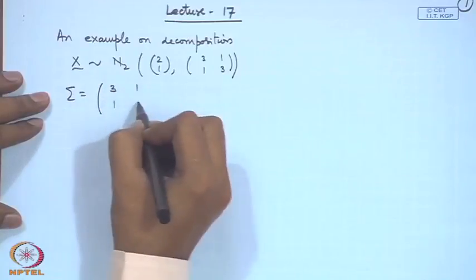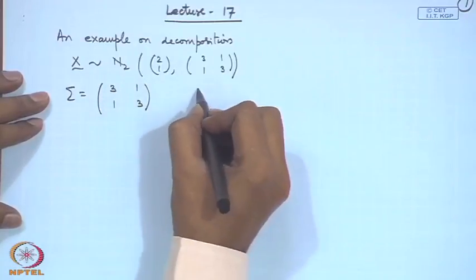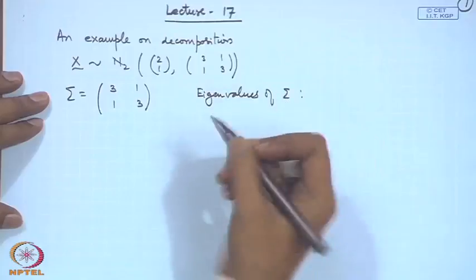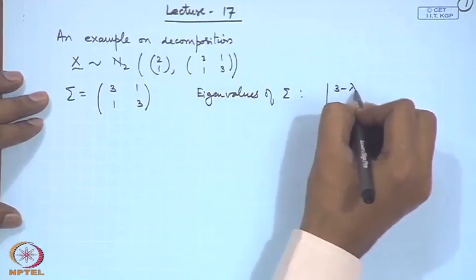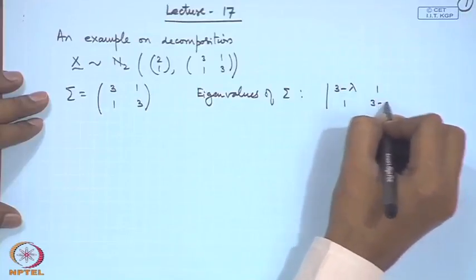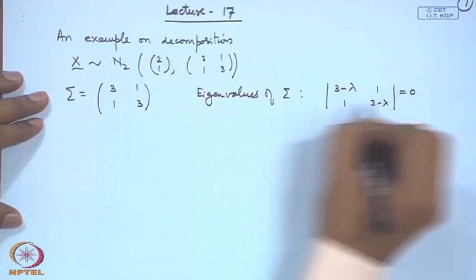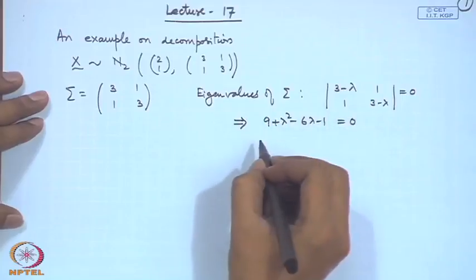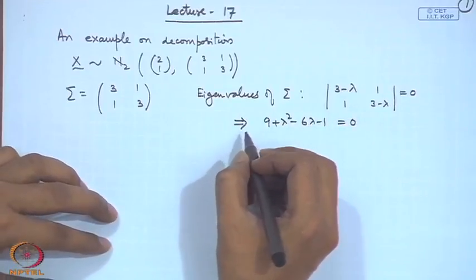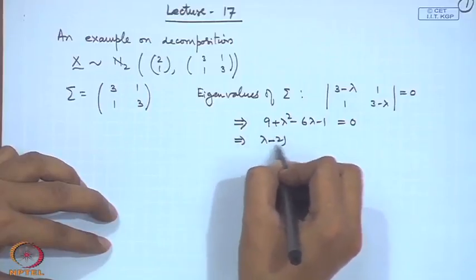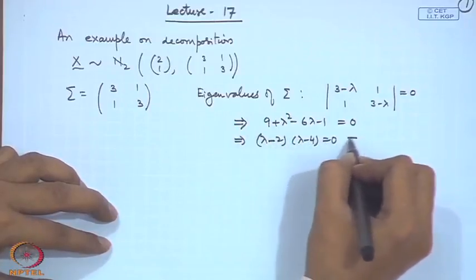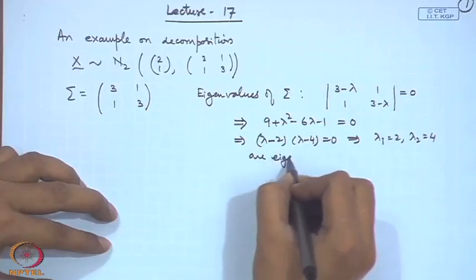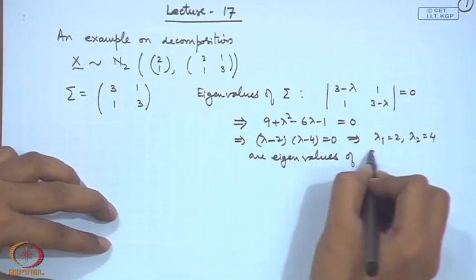Let us find the eigenvalues of sigma = [[3,1],[1,3]]. We apply the standard procedure: det([[3-lambda, 1],[1, 3-lambda]]) = 0, which gives (3-lambda)^2 - 1 = 0, that is lambda^2 - 6*lambda + 8 = 0. This factors as (lambda - 2)(lambda - 4) = 0, giving eigenvalues lambda_1 = 2 and lambda_2 = 4.